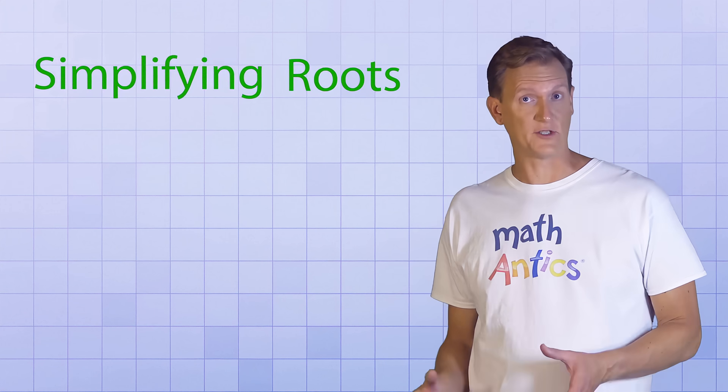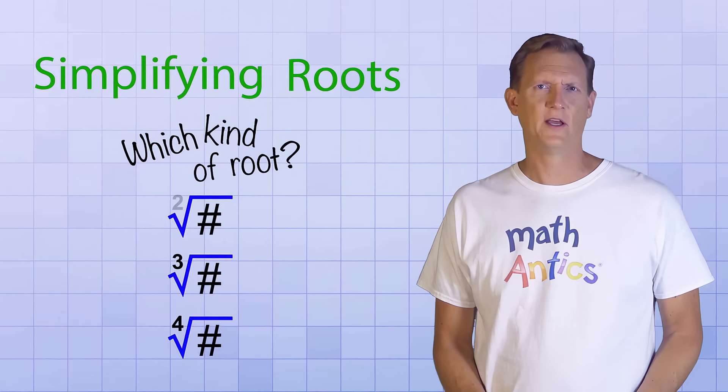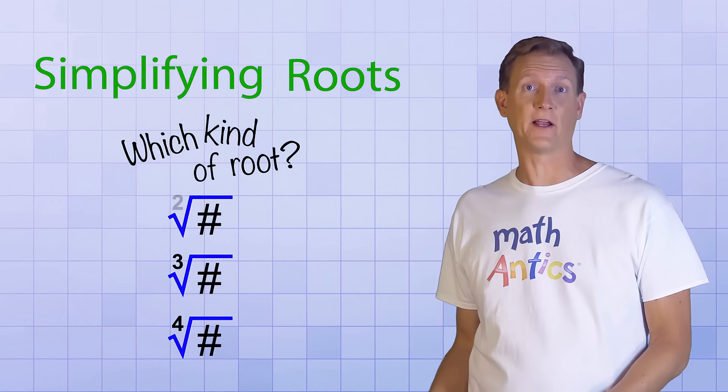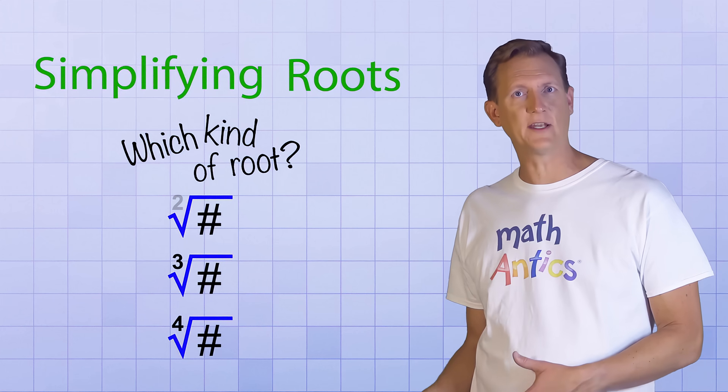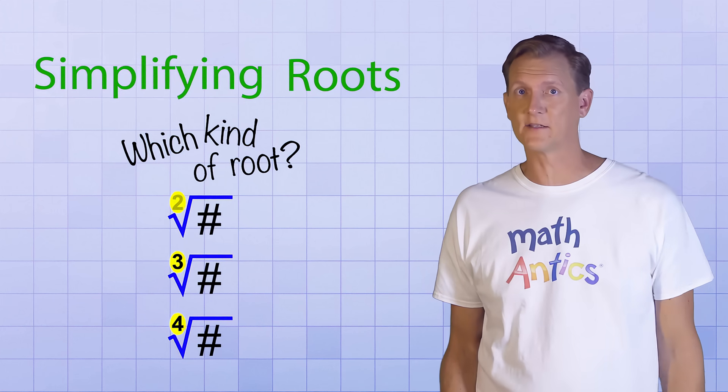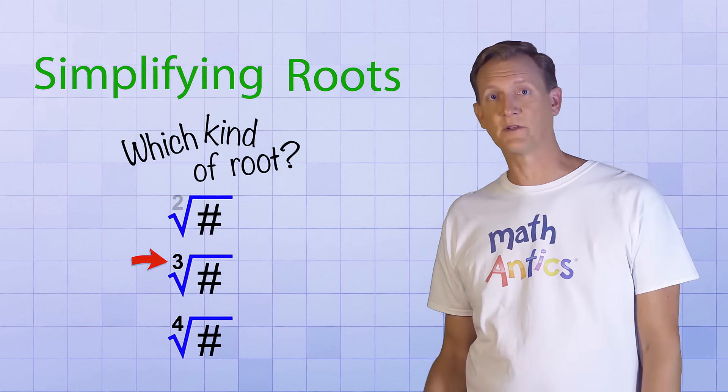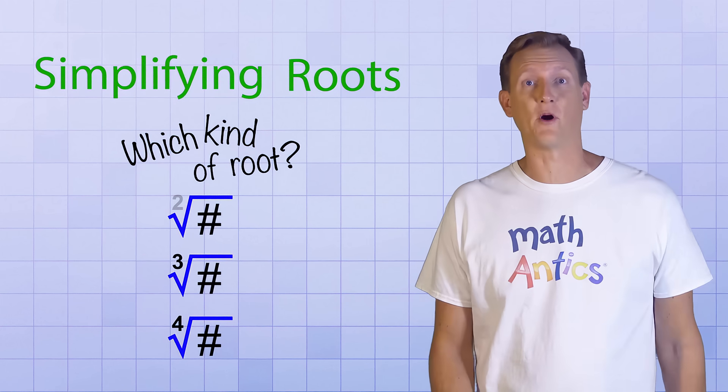So when simplifying roots in general, it's important to pay attention to which kind of root you're dealing with, so you know which factors can be simplified and which can't. Basically, you just look at the index number, and then try to find groups of identical factors of that size. For square roots, it's groups of 2. For cube roots, groups of 3. For fourth roots, it's groups of 4. And so on.